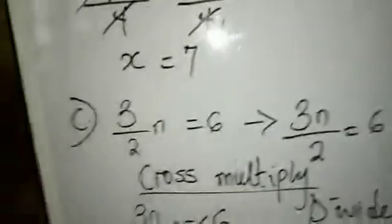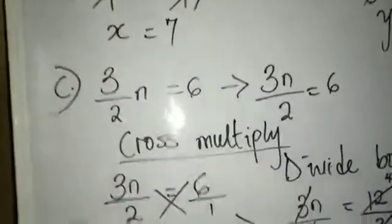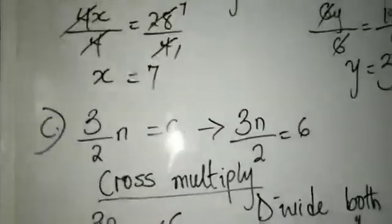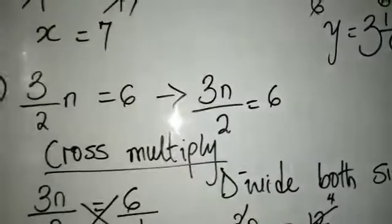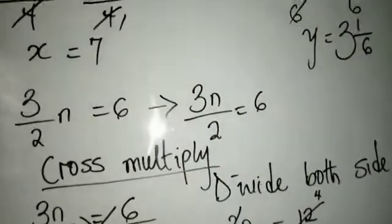Then, let's move to the last example, which is example C. He said, 3 over 2n is equal to 6. To correct the n to one part, we are going to have 3n divided by 2 is equal to 6.